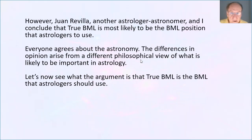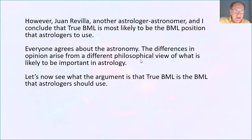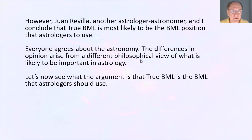Juan Revelia, another astrologer-astronomer, also concludes that the true Black Moon Lilith is most likely the one astrologers should use. For a while in this discussion, it was me against everybody else — I was saying the osculating orbit is real, and they were saying, what do you mean it's real? The planet doesn't move that way. But towards the end of the conversation, Juan Revelia came in and also agreed with me. Based on the pure astronomy of it, there are different points of view.